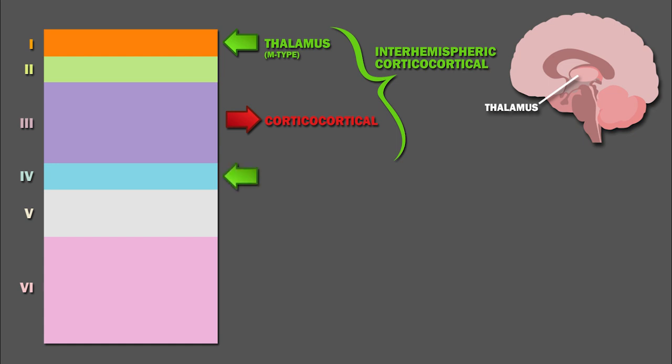Layer 4 receives inputs from core, or C-type thalamus cells. The infragranular layers primarily connect the cortex with subcortical regions.